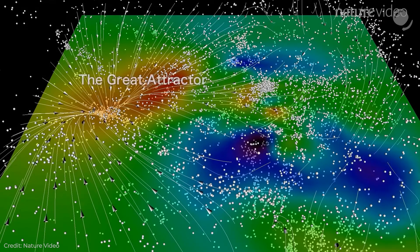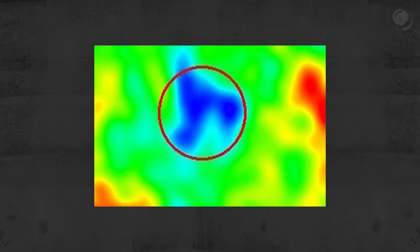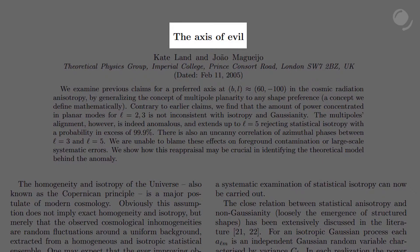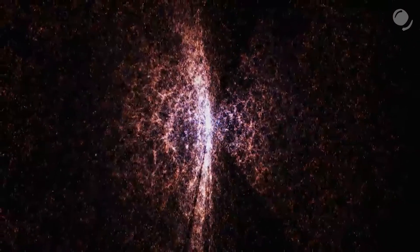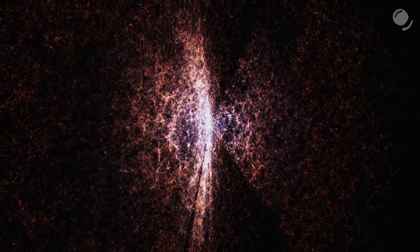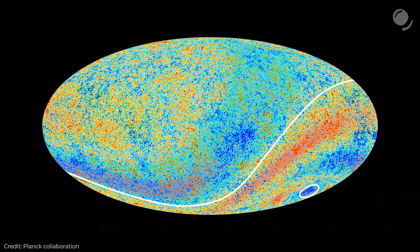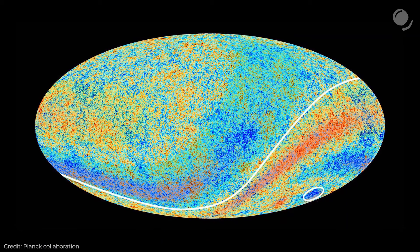Astrophysicists and cosmologists are really fond of epic names: the Great Attractor, Eridanus Supervoid, the Sloan Great Wall, and now the Axis of Evil. If this is the first time you are hearing this name, it's not a cosmological structure that causes evil. Unlike some of the objects mentioned, we aren't even sure that this Axis of Evil exists, but there is some evidence that might hint at its existence.